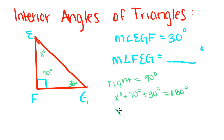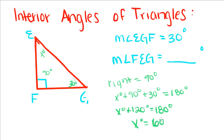If you add this up, you get x plus 120 equals 180. You subtract it over, and you get x is equal to 60 degrees.